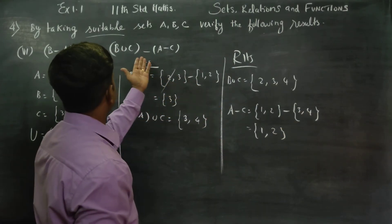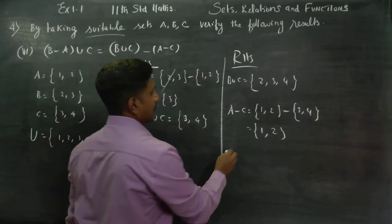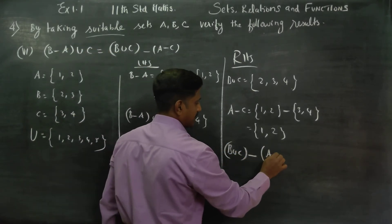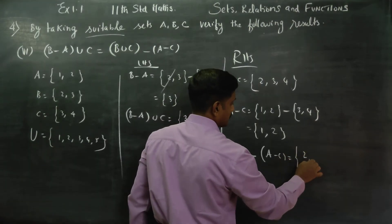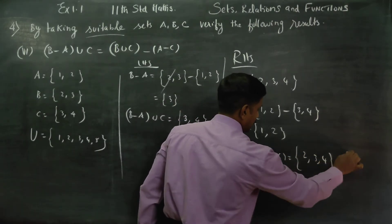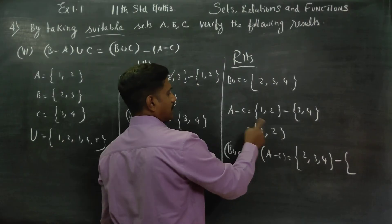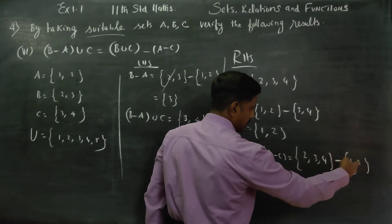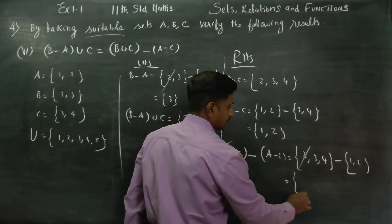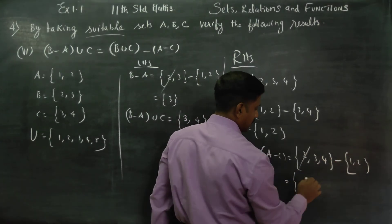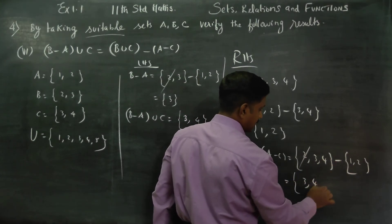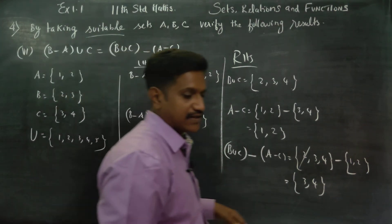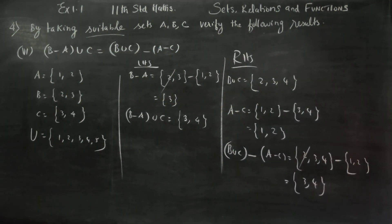Now the two things are equal. B union C minus (A minus C) gives B union C equals the combined result. A minus C is {1, 2} and B union C is {3, 4}. LHS is equal to RHS — verified.